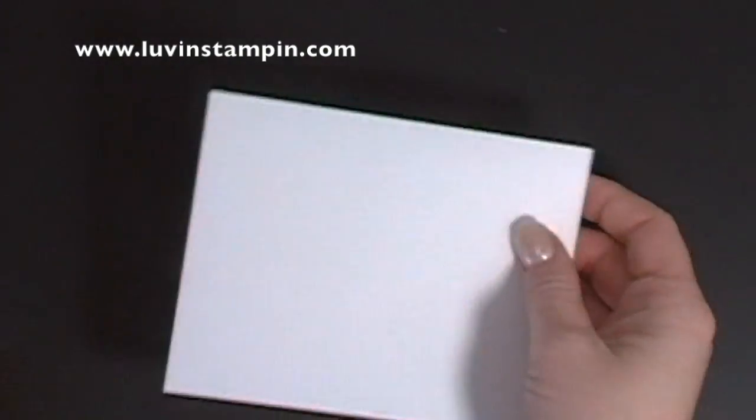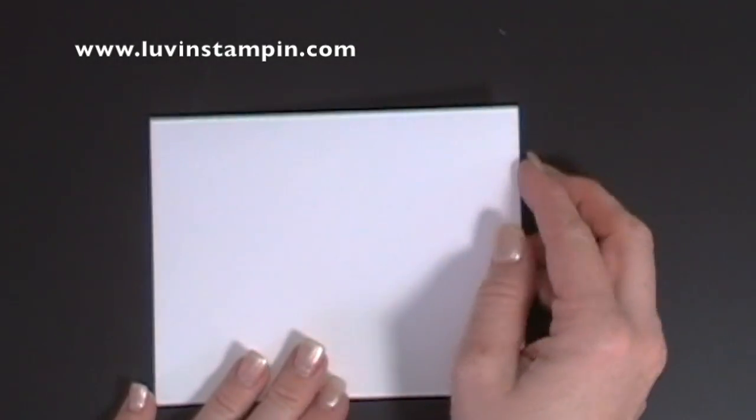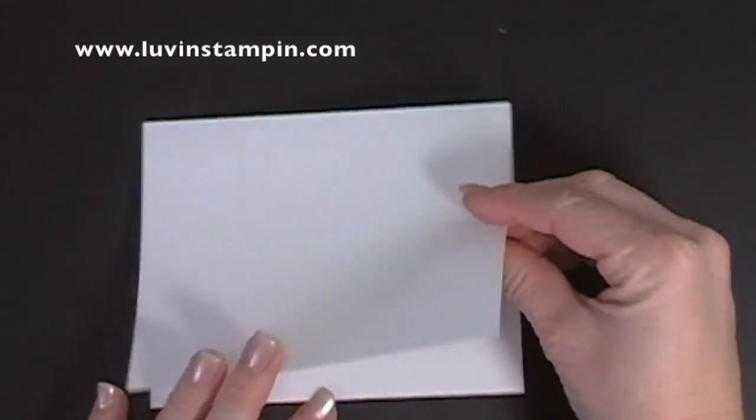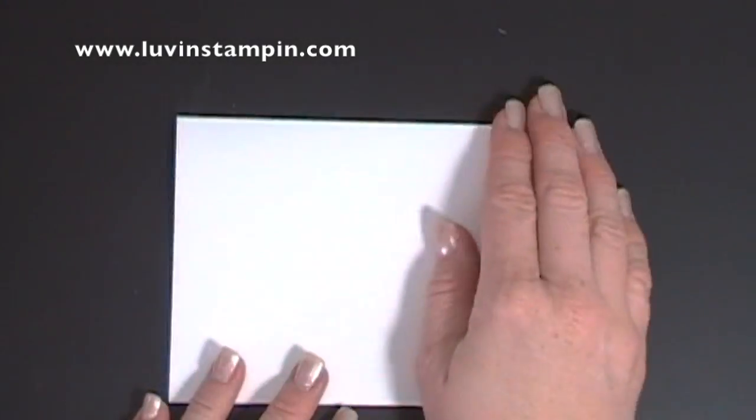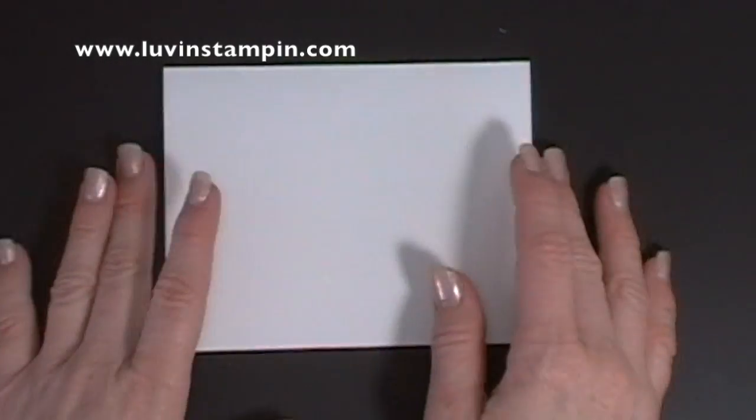So we have a piece of whisper white cardstock cut at eight and a half by five and a half, and I fold it in half to make an A2 size card, which is five and a half by four and a quarter.